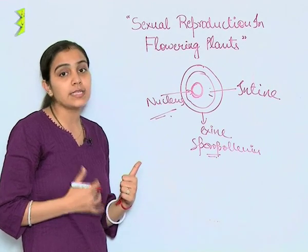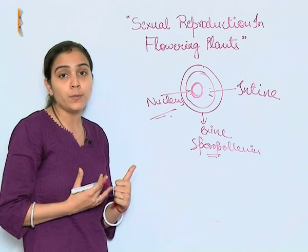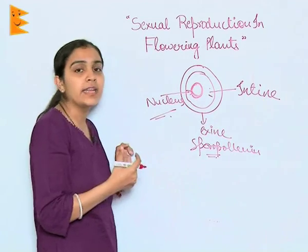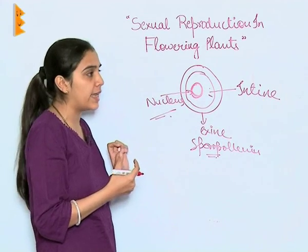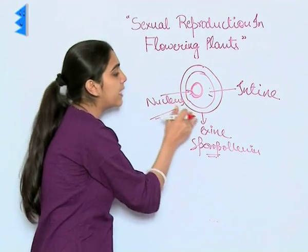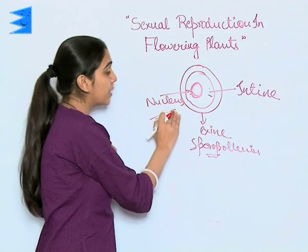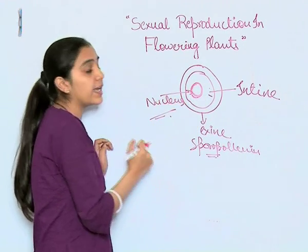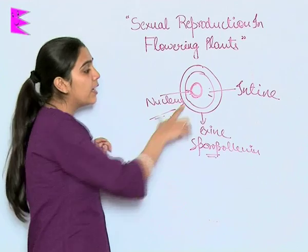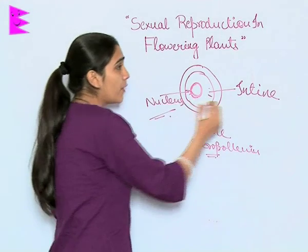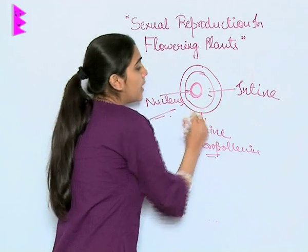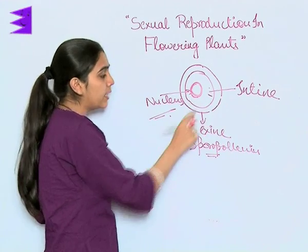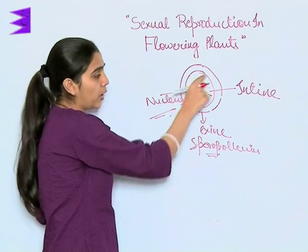Because of sporopollenin's durability, pollen grains tend to be found in fossils. The intine is a thin continuous layer which is a protective covering to the cytoplasm. The cytoplasm of the pollen grain contains a plasma membrane and one nucleus. There are also small germ pores found in the exine of pollen grains.